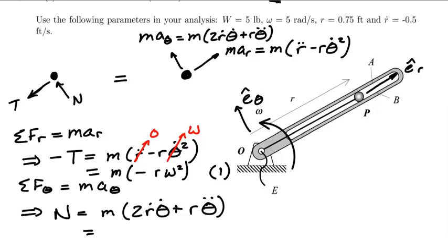And if we do some similar type of analyses here with the normal force, we can note that theta dot is going to go to, in this case, omega. And theta double dot is going to go to zero because omega is a constant rotating rate. And so we'll have that the normal force is going to equal 2M times R dot times omega.